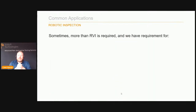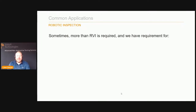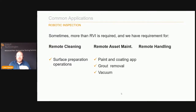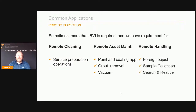Sometimes we need more than just visual inspection. If you're trying to understand the health of an asset and make the best possible decisions, you need as much information as possible. We can look at using a visual inspection system mounted to a robot, then mount other sensors or tools to carry out more tasks — becoming more safe, saving money, and reducing environmental impact. This can include remote cleaning, surface preparation, remote asset maintenance such as coatings and paint application, removal of grout, vacuum, and remote handling tasks such as foreign object retrieval, sample collections, search and rescue, tool recovery, and of course non-destructive testing.